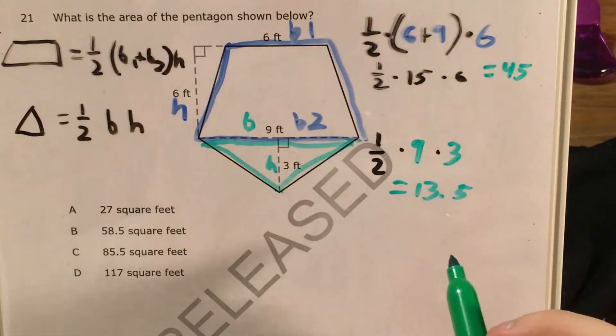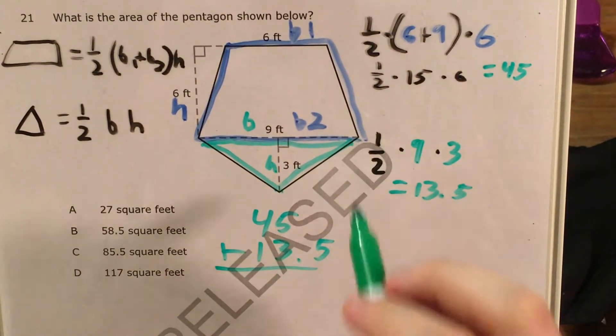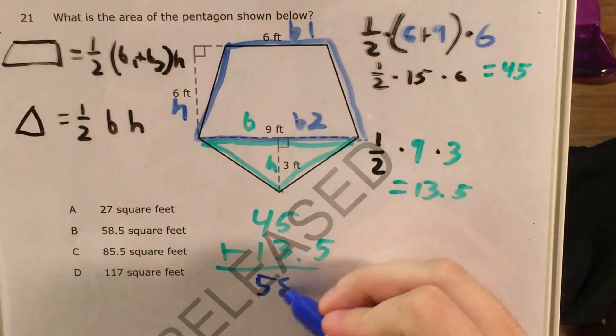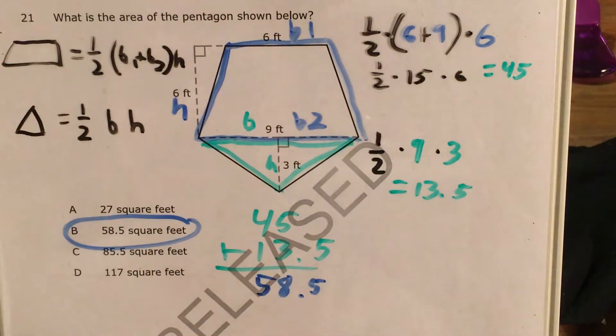Now all I have to do is add up the area of my pentagon and the area of my triangle. So if I add forty-five plus thirteen point five, whether I use a calculator or do this manually or in my head or whatever, I'm going to end up getting fifty-eight point five, which matches answer choice B.